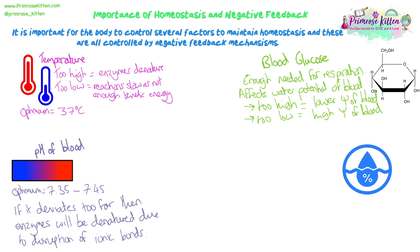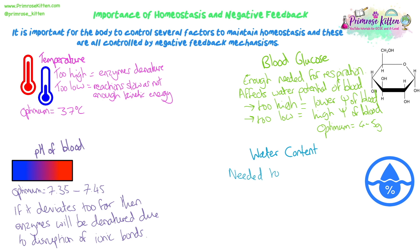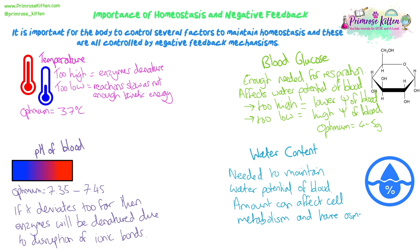That brings us on to blood water content. The water potential of blood and tissue fluid is very important. We need to maintain it because if it's not within an isotonic range for our cells' cytoplasm, it's going to cause osmotic effects — shrinking or bursting cells at the extremes. We also need water for some reactions, important for metabolism, such as condensation and hydrolysis reactions. If we don't have enough water, hydrolysis reactions won't be carried out efficiently. So osmoregulation, the regulation of the water potential of the body, is very important.